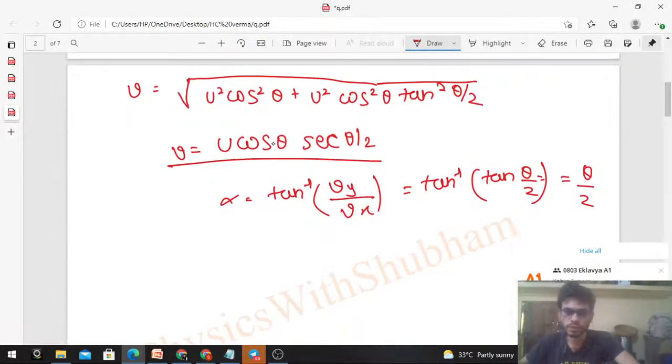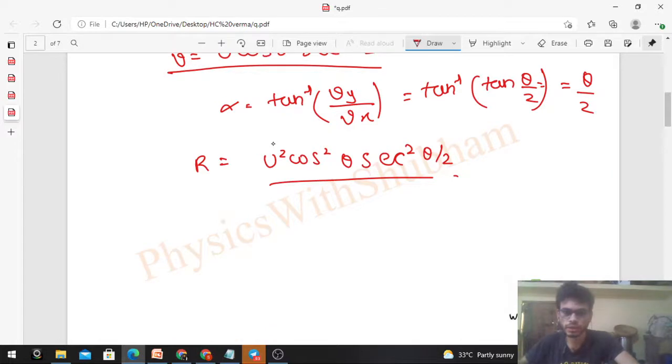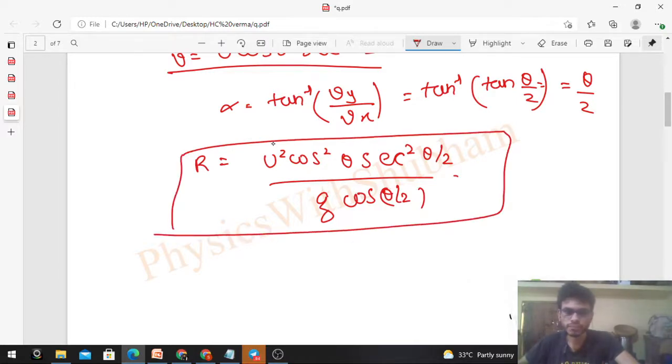r = v²/(g cos α). v² means u² cos² θ × sec²(θ/2), divided by g × cos α, and cos α = cos(θ/2). So this is your answer.